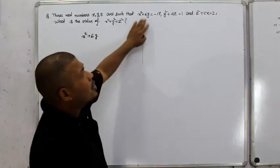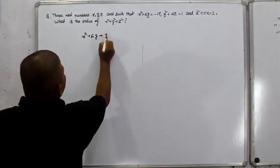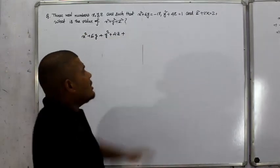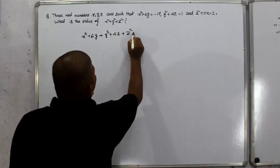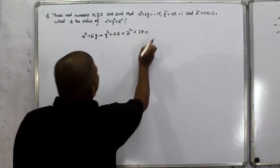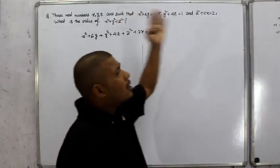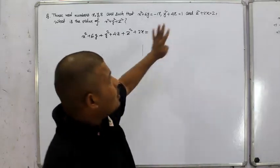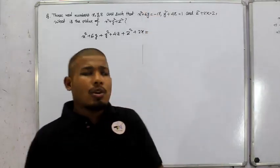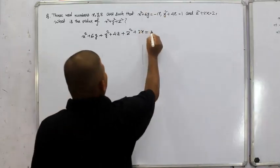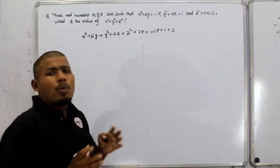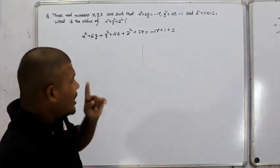We'll add the left side of the first equation, then y squared plus 4z from the second equation, then z squared plus 2x from the third equation. On the right side, we add minus 17 plus 1 plus 2.